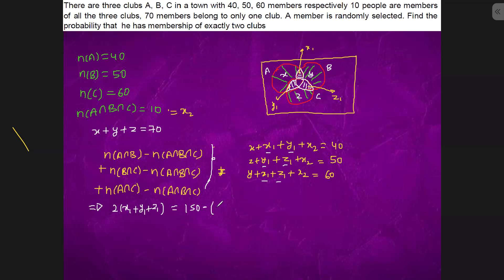Minus x, y, z minus 3x2. So finally what we are getting: x1 plus y1 plus z1 is equals to 75 minus 1/2 of x, y, z which is 70, and 3/2 of x2 is what, 10.